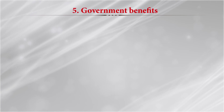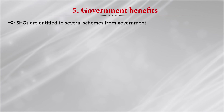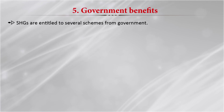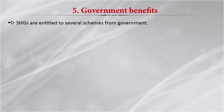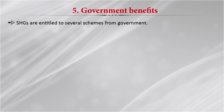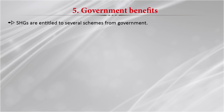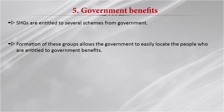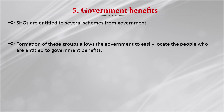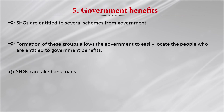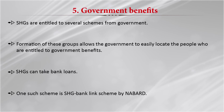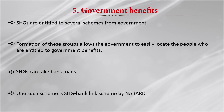The fifth aspect is the benefits of government schemes. SHGs are entitled to several schemes from the government, and this information reaches them so they can use those schemes for the benefit of themselves, their families, co-members, and society as a whole. Formation of these groups allows the government to easily locate people entitled to government benefits. SHGs can even take bank loans — one such scheme is the SHG bank linkage scheme by NABARD.